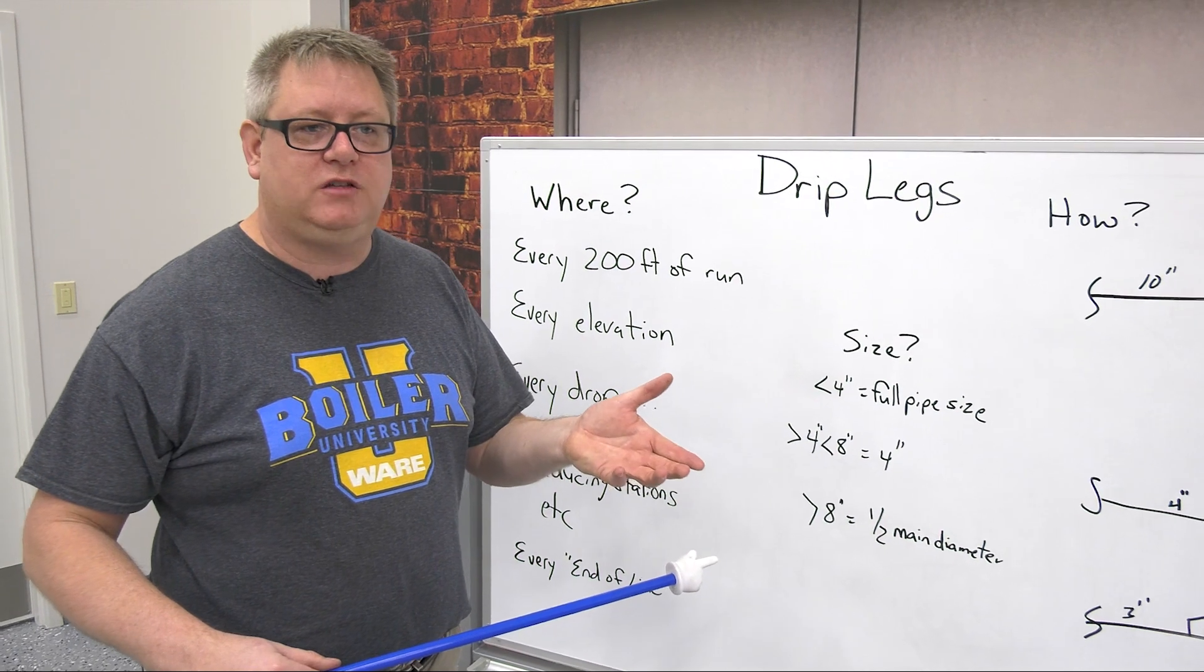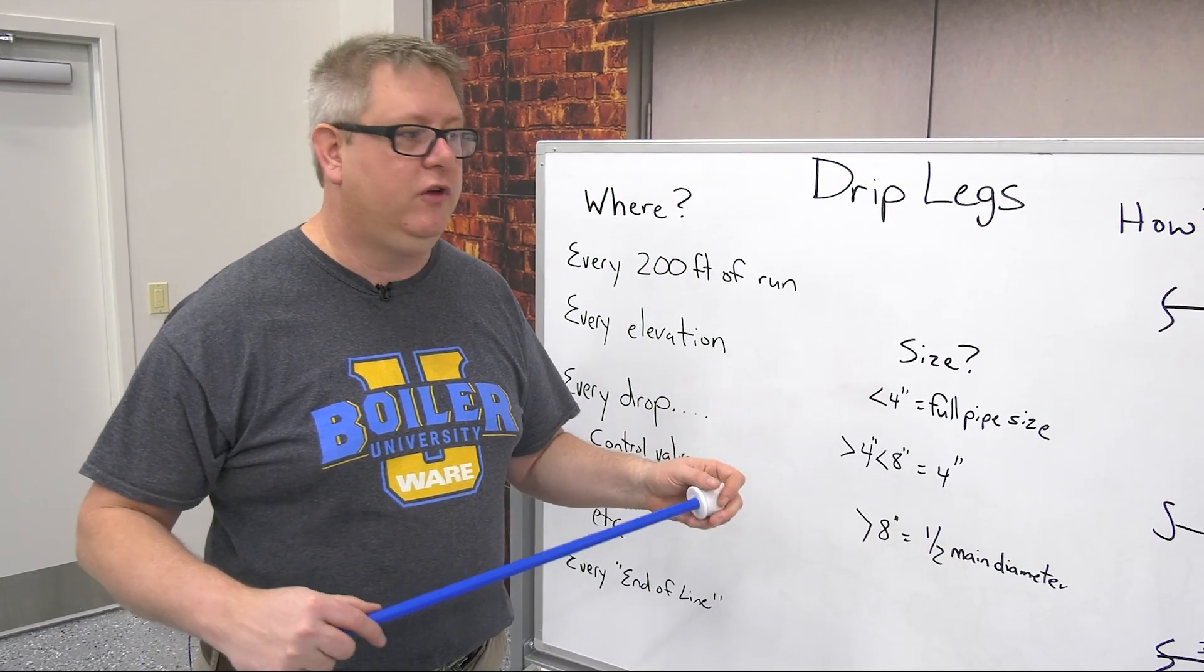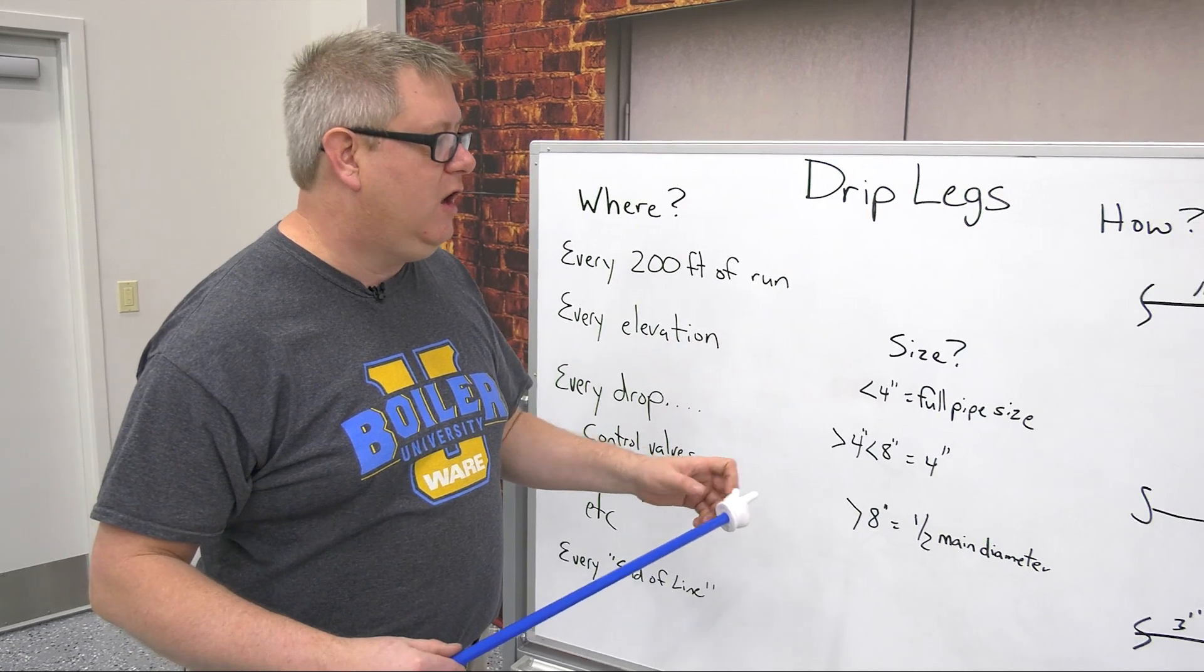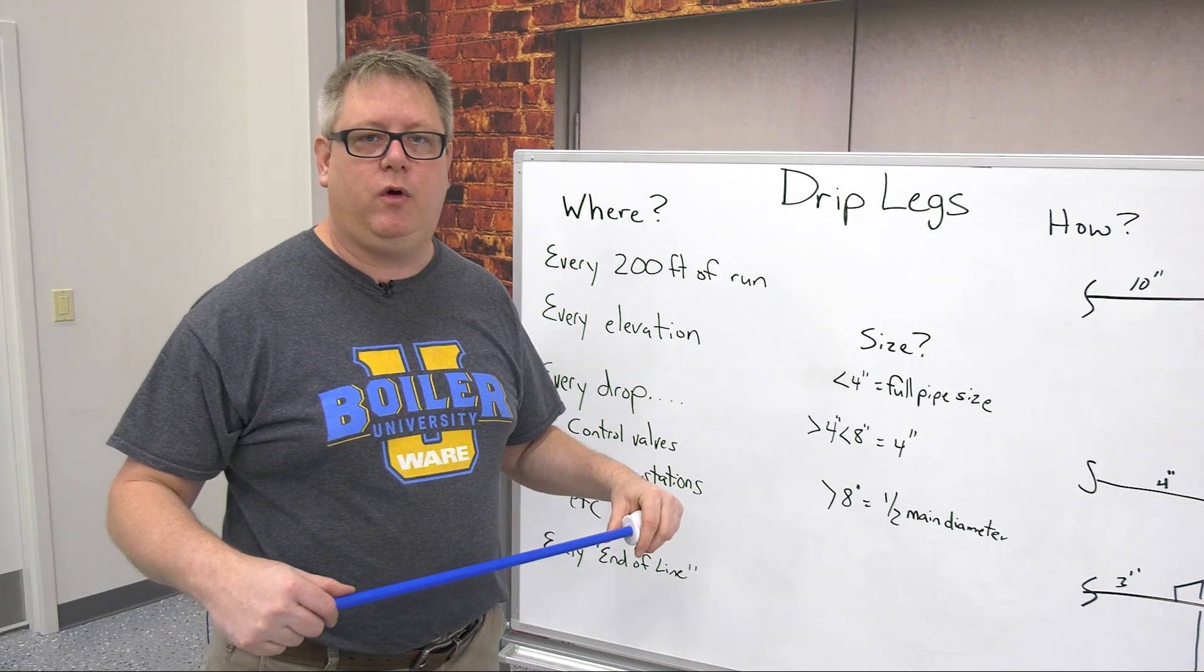Really the cost in piping is the labor. So if we go ahead and make those drip legs full size or as large as practical, then we're going to get good condensate removal at those points.